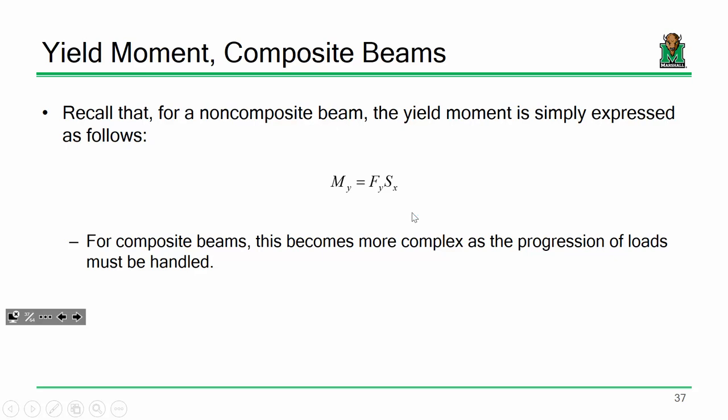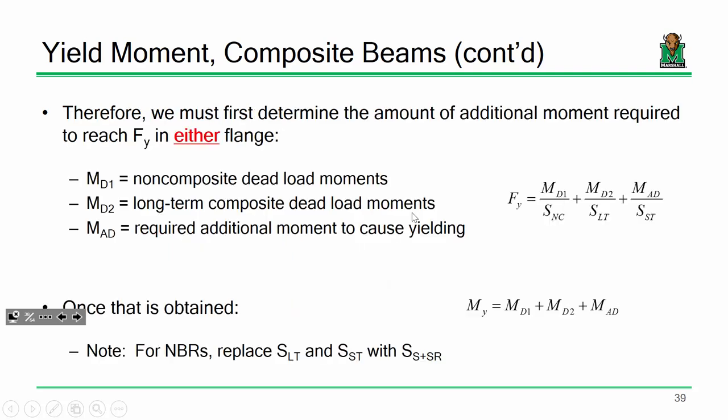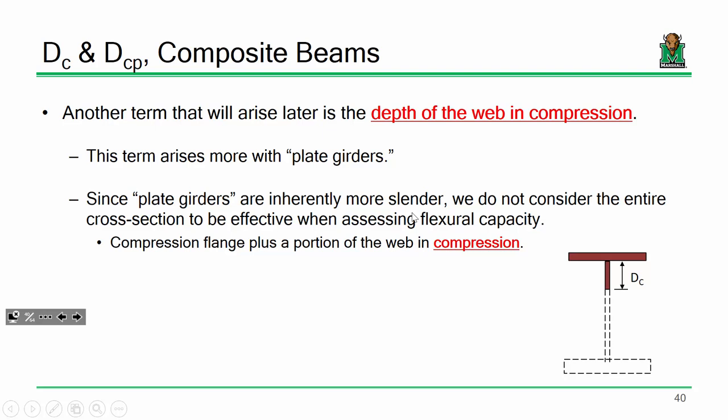We also recognize that the yield moment isn't quite as simple as it used to be. It used to be just FY times the section modulus — look it up in the steel manual, multiply by FY, and there you go. In composite construction, that's not so straightforward, specifically because we have to recognize staged construction. Those loads progress through the section as the girder becomes a bridge. The steel beam by itself has to resist its own self-weight, cross frames, forms, studs, stiffeners, and the weight of the wet concrete. But once the wet concrete cures and becomes composite, that composite section can resist the remaining dead loads and live loads. So computing the yield moment is also not straightforward — we have to determine the additional moment that causes stresses to reach FY and add those moments up. You can have a yield moment for the top flange and for the bottom flange.